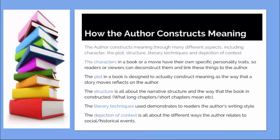The characters in a book or movie have their own specific personality traits, so readers or viewers can deconstruct them and link these things to the author. The plot is designed to construct meaning, as the way a story moves reflects on the author. Structure is about the narrative construction — for example, what do long or short chapters mean? Literary techniques demonstrate the author's writing style, and the depiction of context is about the different ways the author relates to social or historical events.